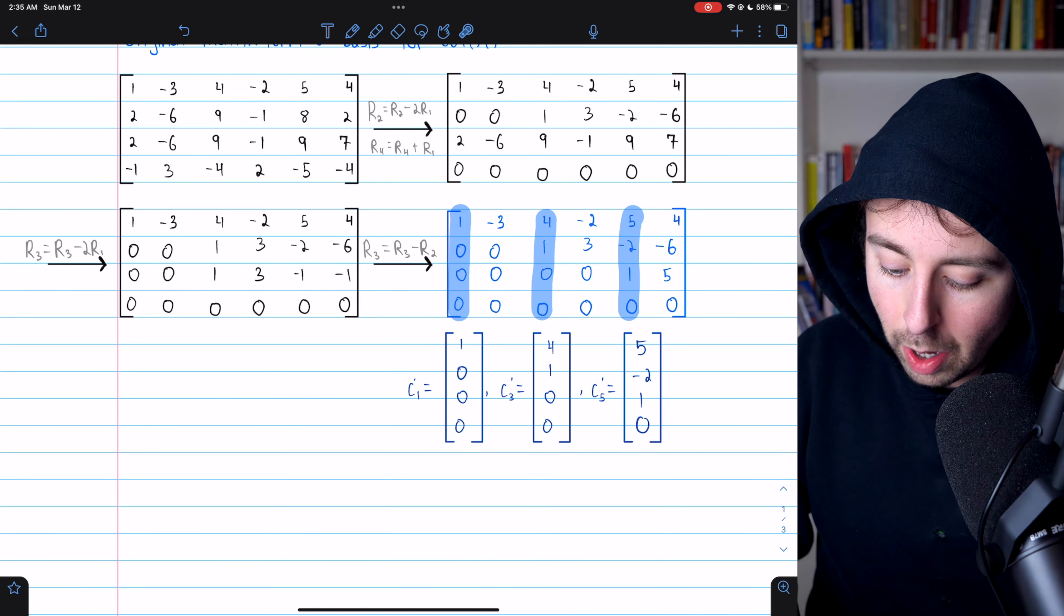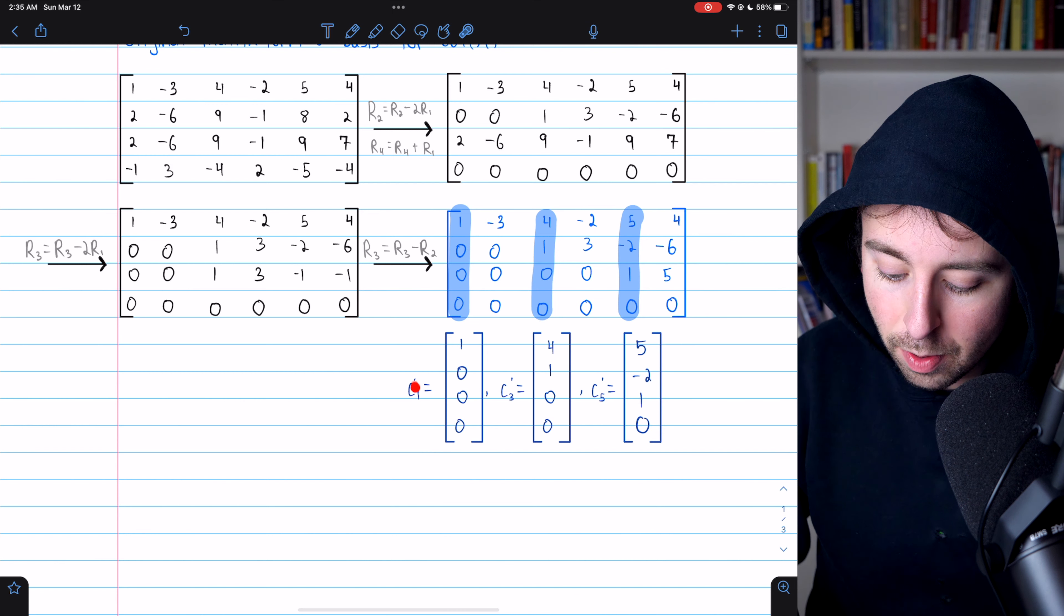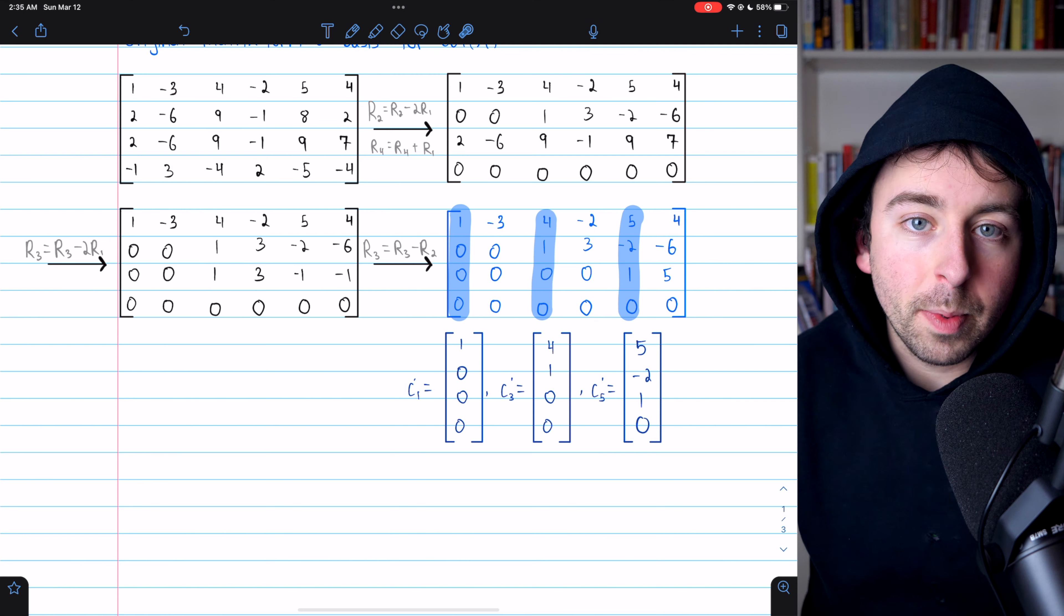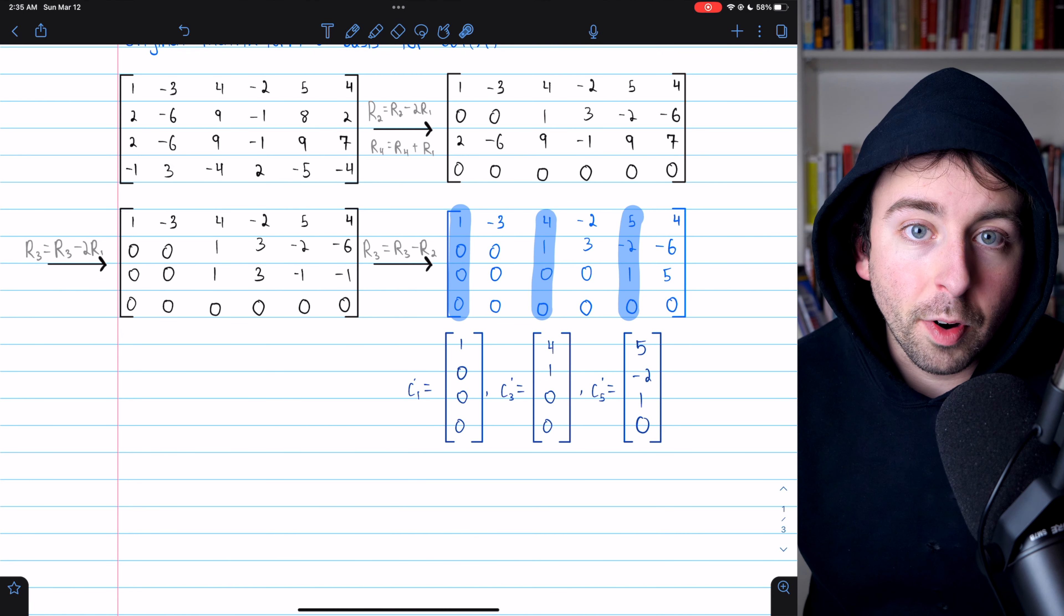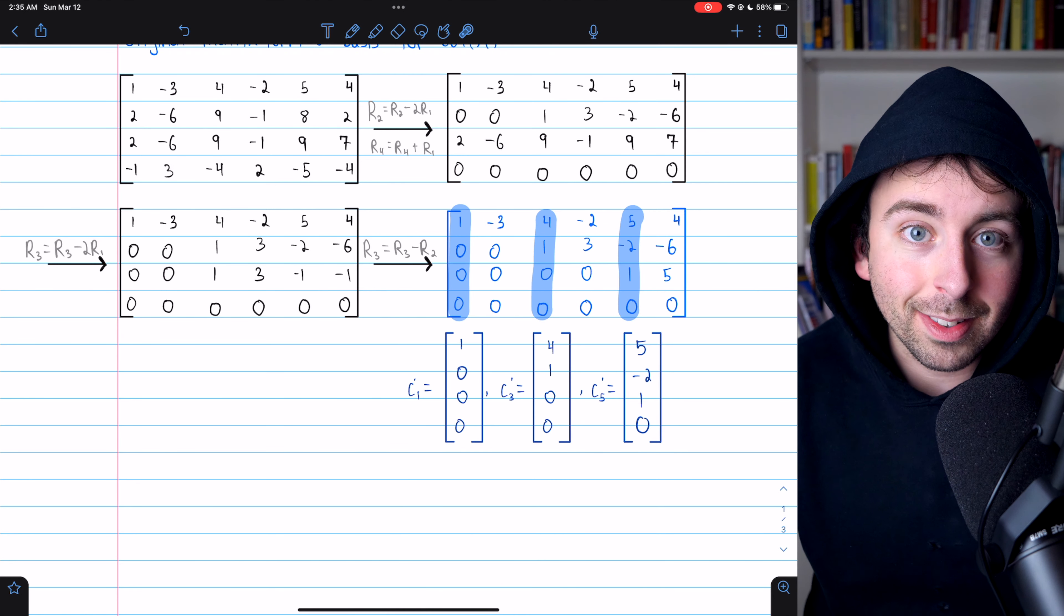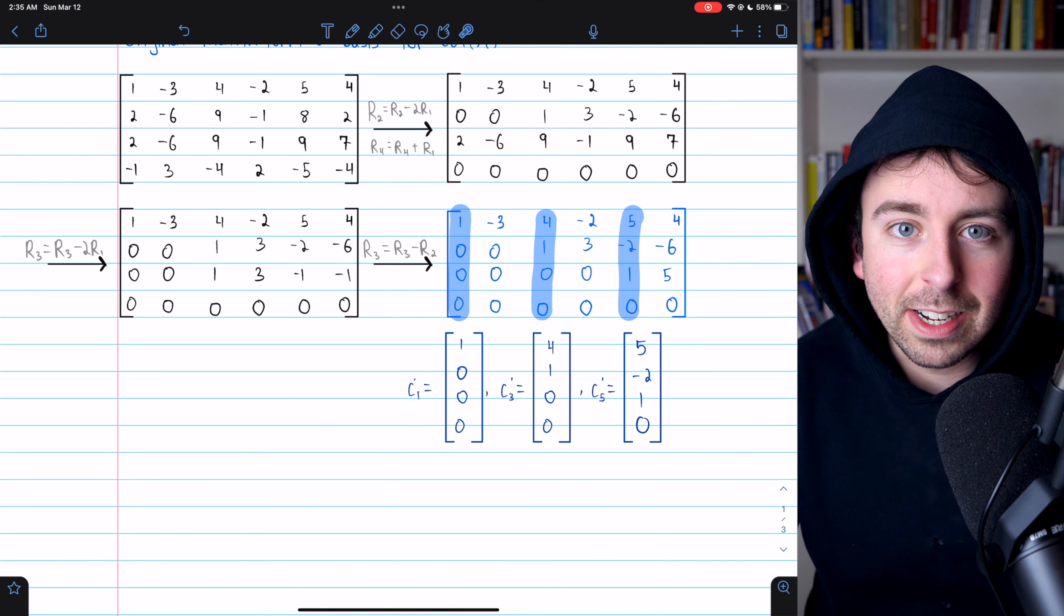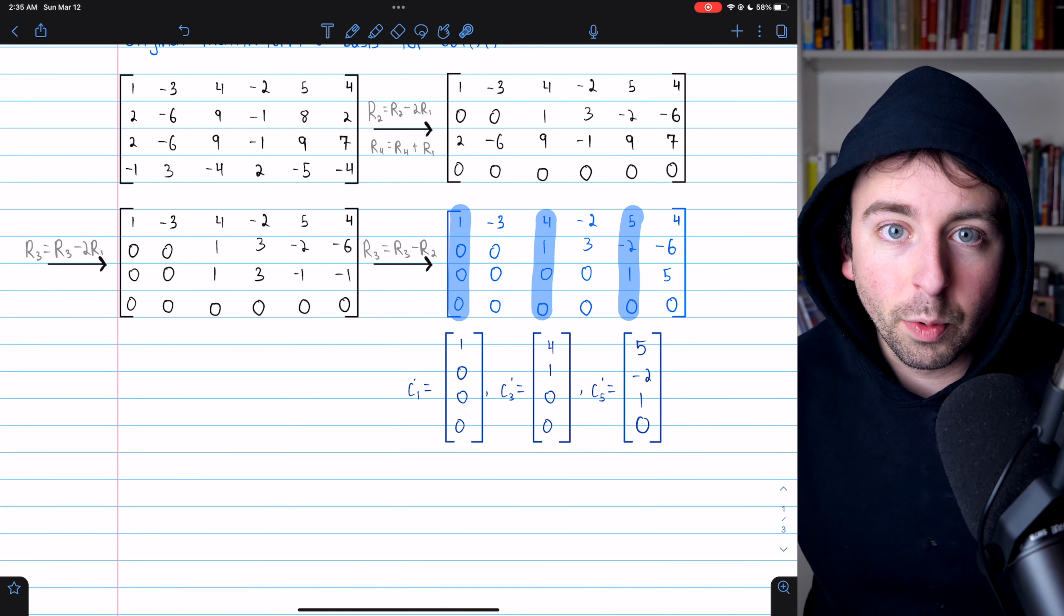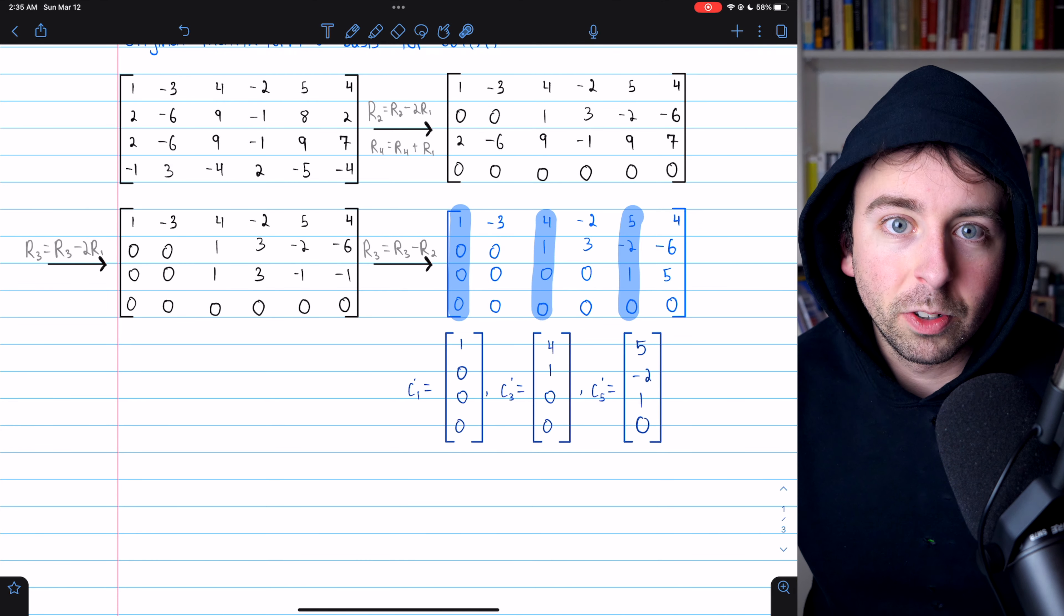And we may choose to write those as c prime one, c prime three, and c prime five, using primes here because these are column vectors from the echelon form matrix, not the original matrix A that we're interested in. But we now have sufficient information to find a basis for the column space of the original matrix.